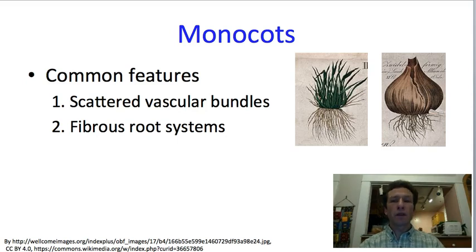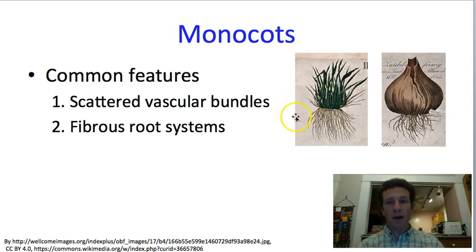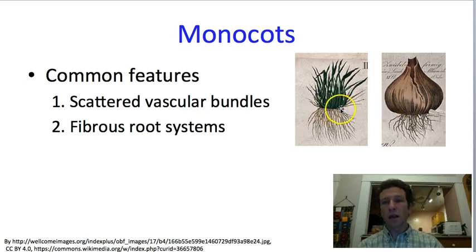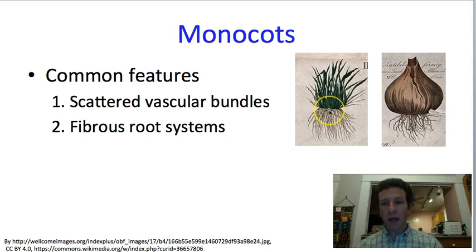Another feature of the monocots is that they have fibrous root systems. There's not one central taproot; instead, the taproot dies very early in development and adventitious fibrous roots form instead. An onion and a grass are good examples of this pattern.